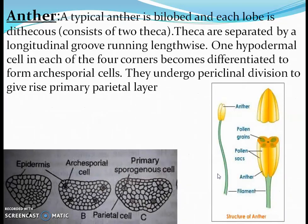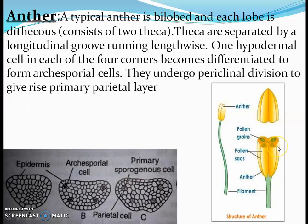Here you have to learn the structure of a typical anther. A typical anther is bilobed — you can see the bilobed structure. It is a four-sided, tetragonal structure. Between the two lobes there is the line of dehiscence, which forms a groove-like structure. Four microsporangia are located at the corners.